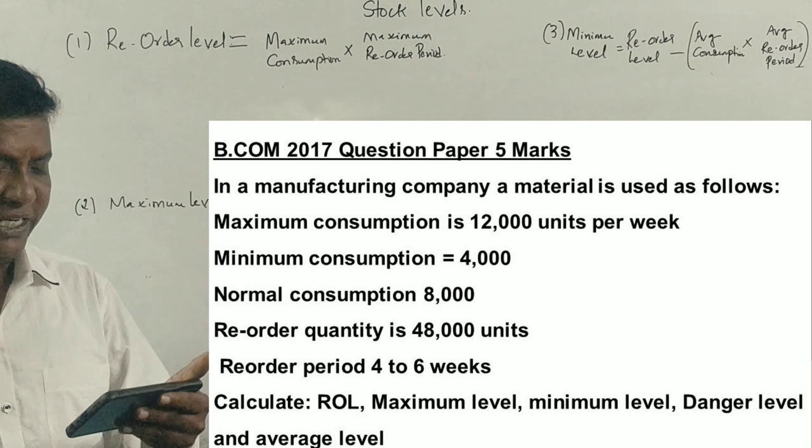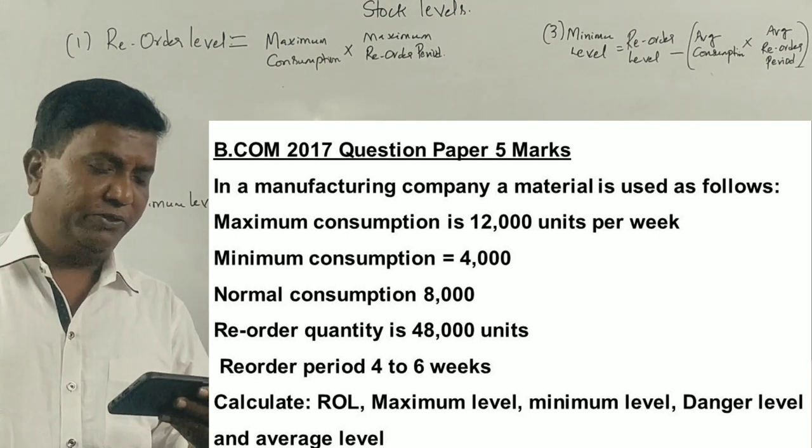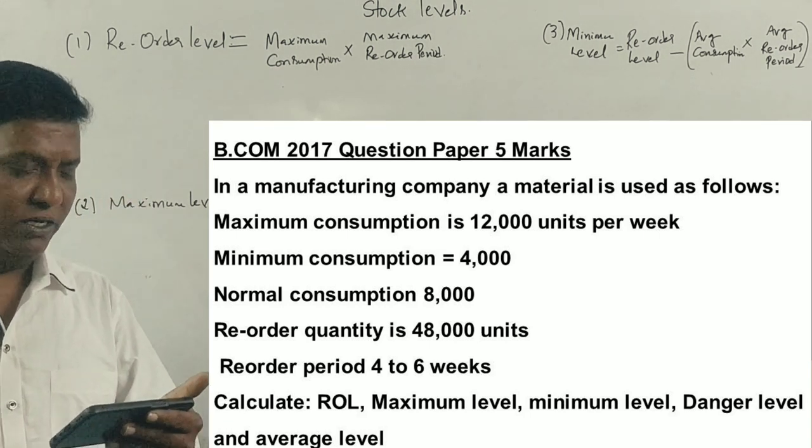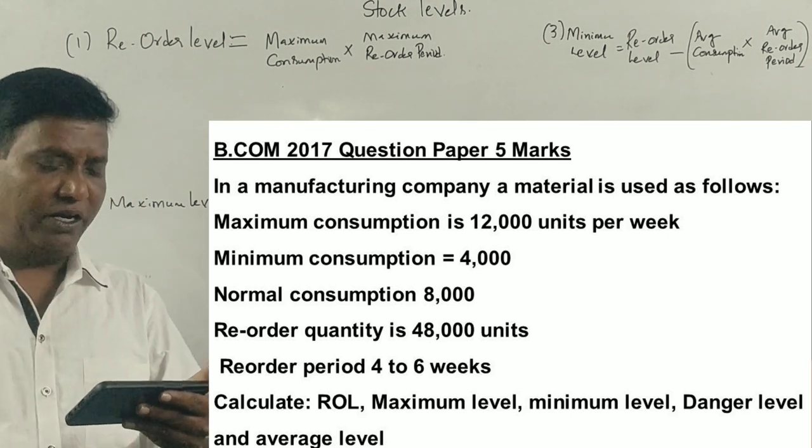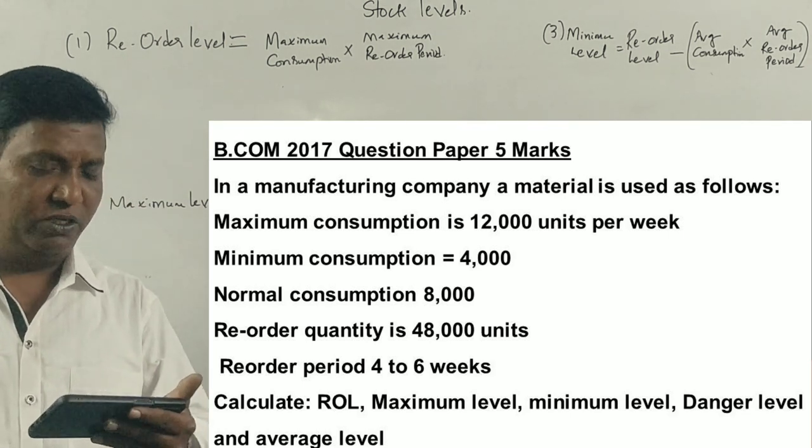Maximum consumption 12,000 units per week, minimum consumption 4,000 units per week, normal consumption 8,000 units per week, reorder quantity 48,000 units.